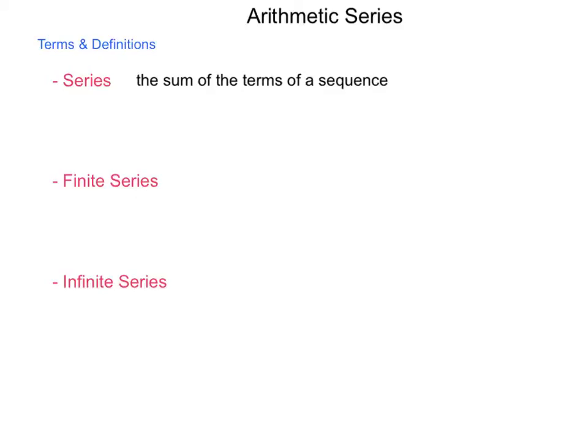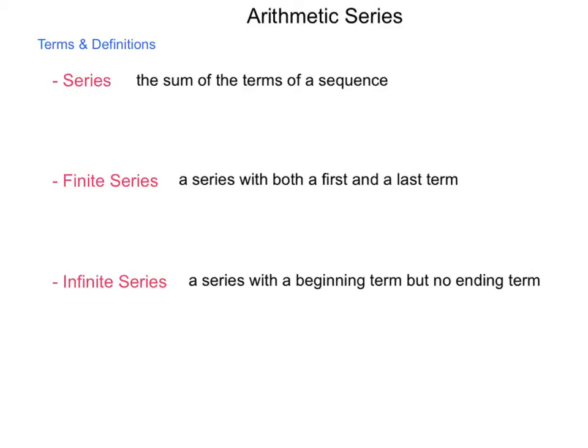A series comes in two different types. First is a finite series, which is a set of numbers that has both a first and a last term. Now, some series have a beginning but without an end, and those are infinite series. When we're dealing with arithmetic sequences, they tend to be the type that are finite. So we look at finite series for arithmetics.